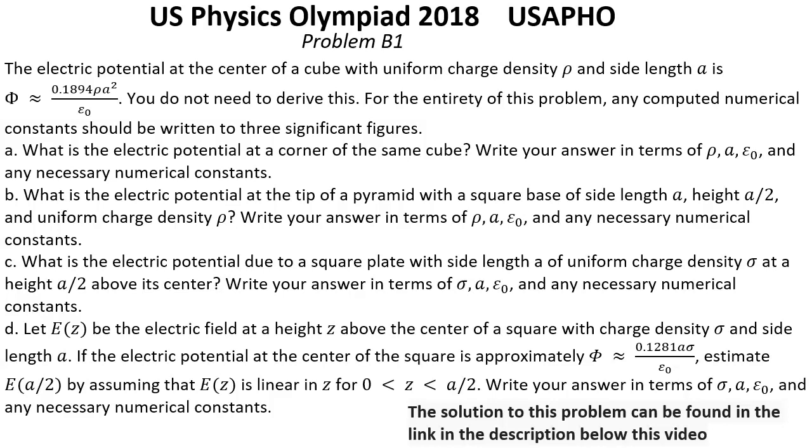Question B: What is the electric potential at the tip of a pyramid with a square base of side length a, height a/2, and uniform charge density ρ? Write your answer in terms of ρ, a, ε₀, and any necessary numerical constants.